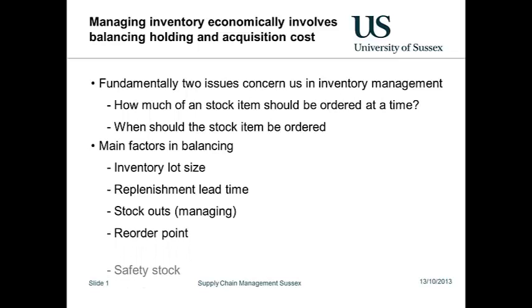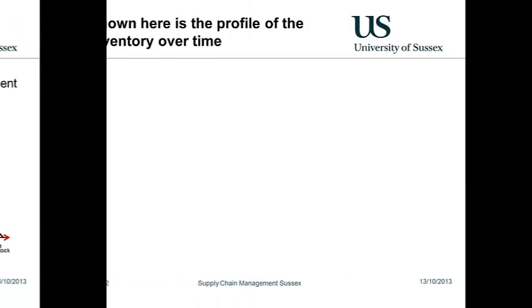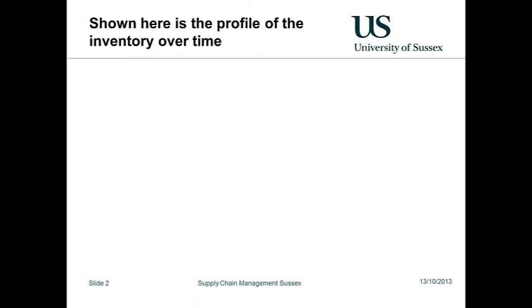replenishment lead times, stock outs, reorder points, as well as safety stock. The vertical axis shown here is the quantity of on-hand inventory at any point in time, the horizontal axis showing its evolution.